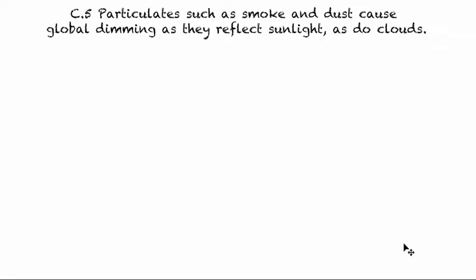In this video we're going to take a look at this idea of global dimming, which may actually be helping us underestimate the potential of global warming. We're going to try to understand how particulates such as smoke and dust cause global dimming as they reflect sunlight, as do clouds.